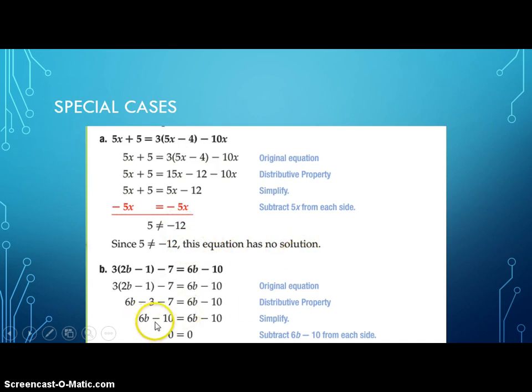And if you get to the point in the problem where you see this, 6b minus 10 equals 6b minus 10, that is the identity. Or if you have to continue even farther to get 0 equals 0, that is always true. So this would be an identity or all real solutions. So we want to be able to identify through algebra when we're solving an equation when we get to a no solution problem or an infinite number of solutions or an identity.